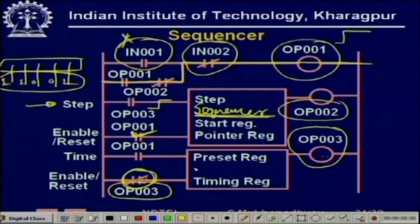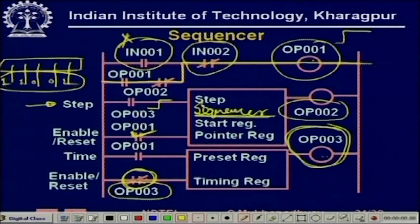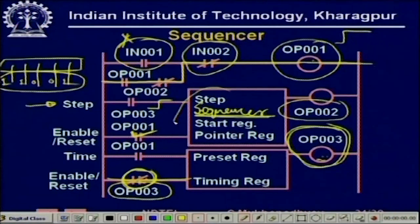OP001 is already on, so it times again. Basically this arrangement continuously times, and the moment OP003 goes high after the timing interval, it gives a pulse to the sequencer. A step is executed in the sequencer, then because it is latched, when this goes high it resets again, and once reset it starts timing again. So it continuously generates timing intervals and at the end of each interval a pulse executes the next sequence register of the sequencer.